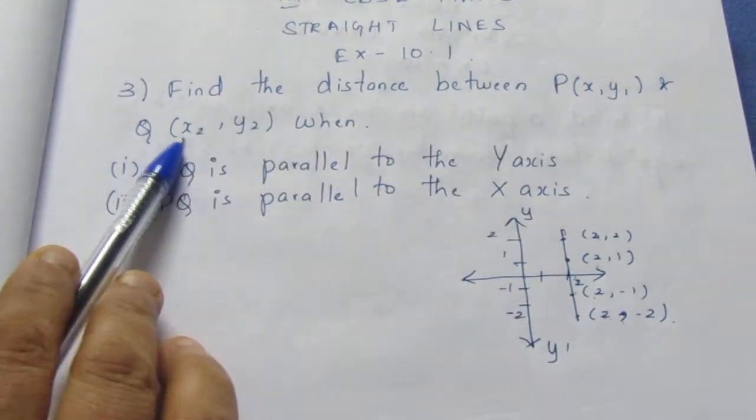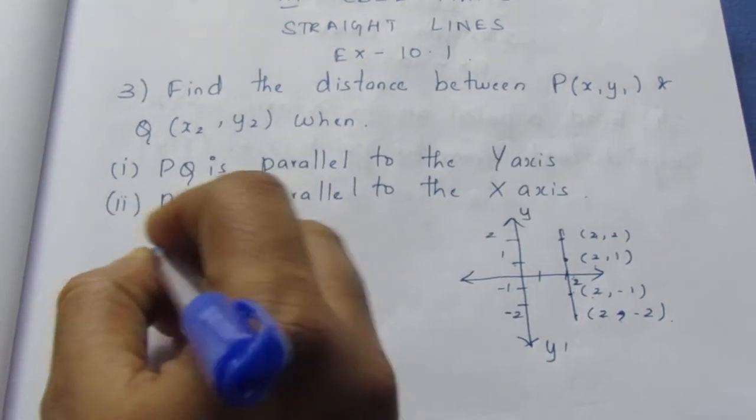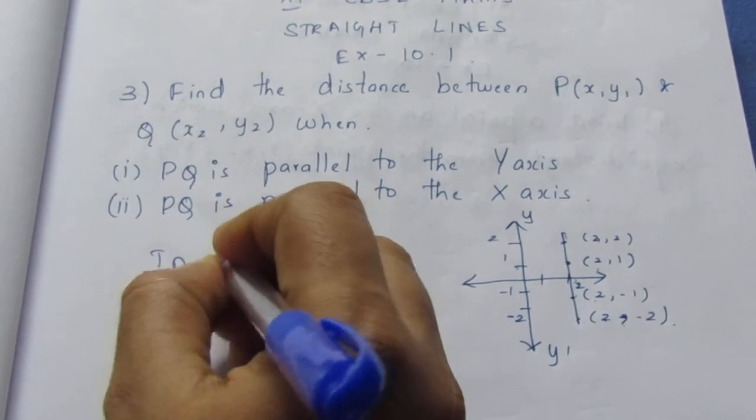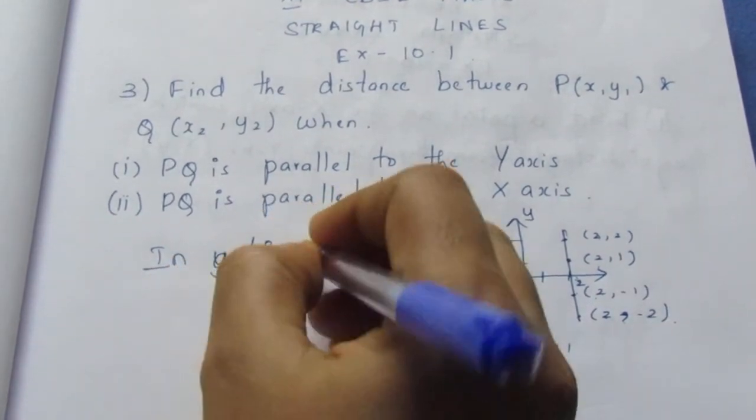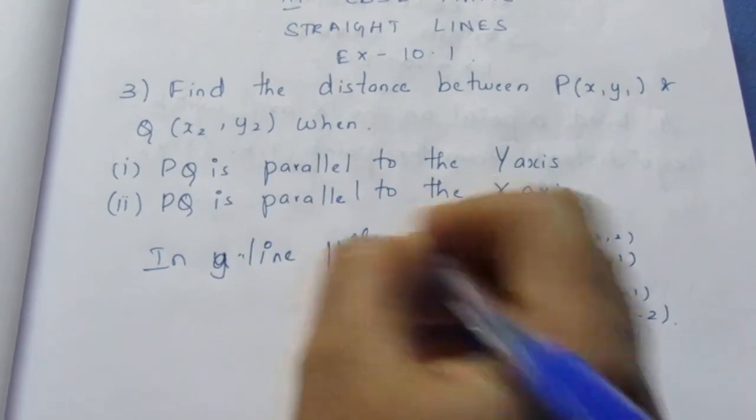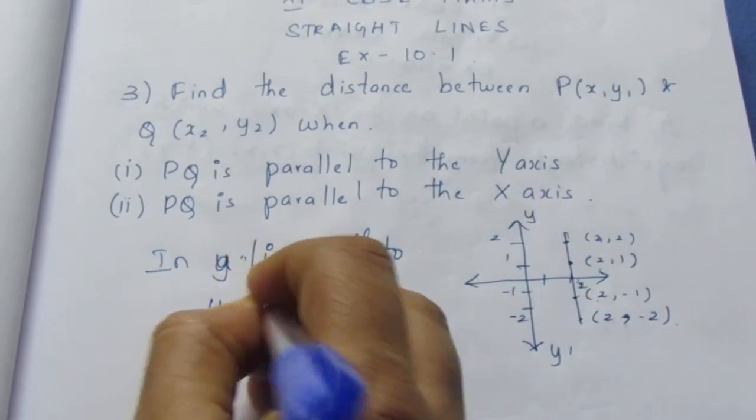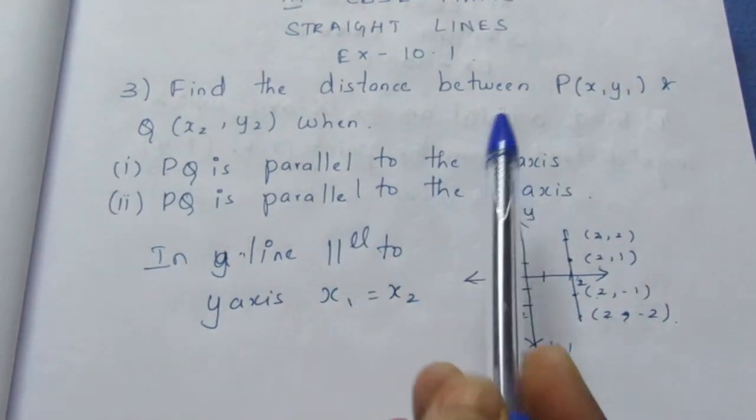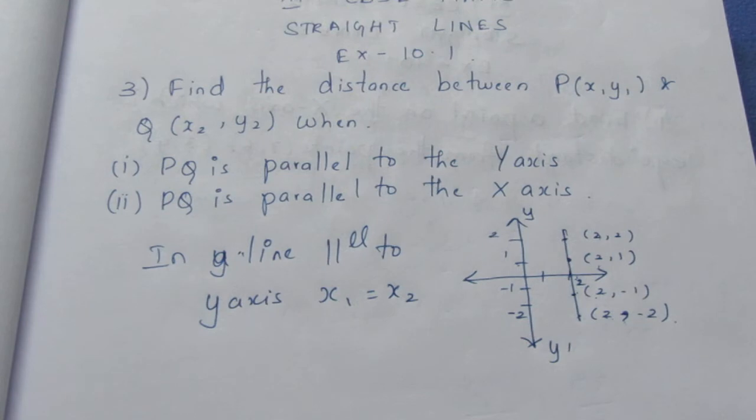So according to this we can directly say that in a line parallel to Y axis, we can say that x1 is equal to x2 because here there are x1 and x2. We know that parallel to Y axis all the X values will be equal. The same way for a line parallel to X axis all the Y values will be equal. So remember this point.